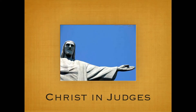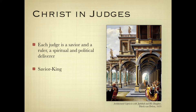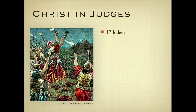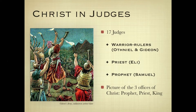Christ is seen in the Book of Judges — each judge was regarded as a savior or a ruler, with both a spiritual and political component. The book reveals the need for a righteous savior-king at the end. In Judges there are 17 judges mentioned altogether: some were warrior rulers like Othniel and Gideon, one was a priest — Eli — and one was a prophet — Samuel, the first of the school of the prophets. This gives a cumulative picture of the three offices of Christ, who excelled all predecessors as the ultimate prophet, priest, and king — not according to the order of Levi, but the order of Melchizedek.